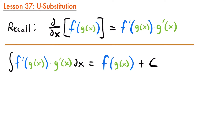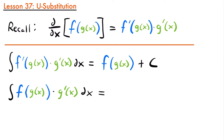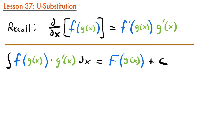We can rewrite this to reflect that we're working with an antiderivative: the integral of some function of g(x) times the derivative of g(x) dx equals the antiderivative of f(g(x)) plus c. This gives us the rule for integrating a composite function. To make this process simpler, we use the method of u-substitution by bringing in another variable, u.